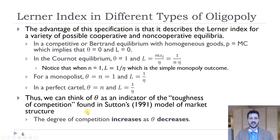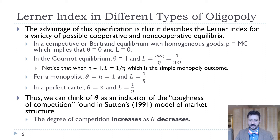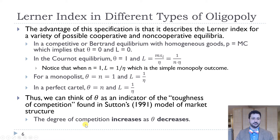We can think of theta as an indicator of the toughness of competition, but it's an inverse relationship — the degree of competition increases as theta decreases. Perfect competition has theta equal to zero, and as theta increases we get less competition and more market power.